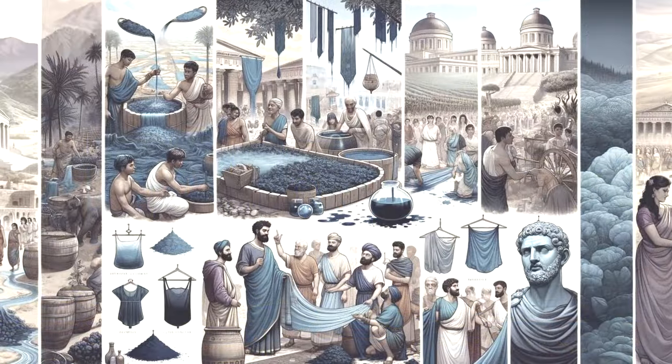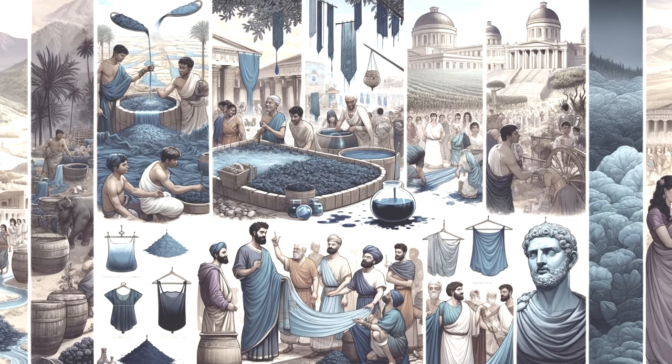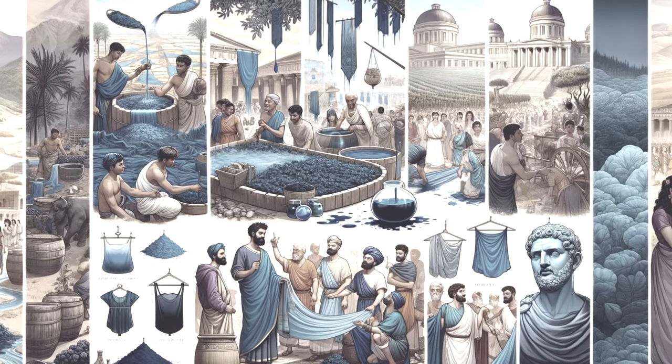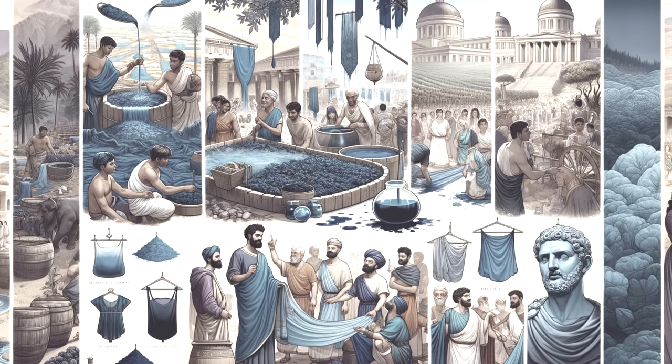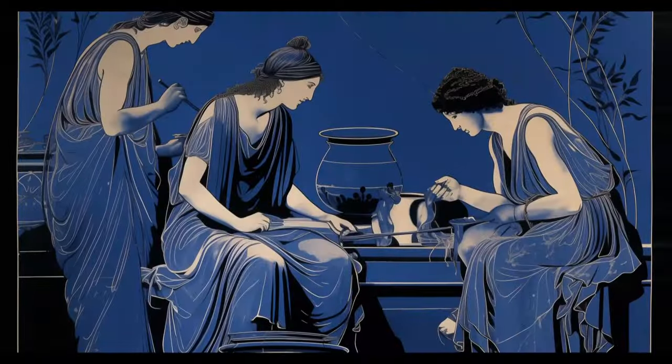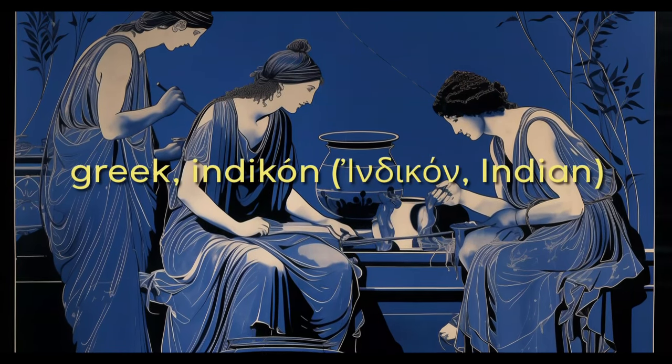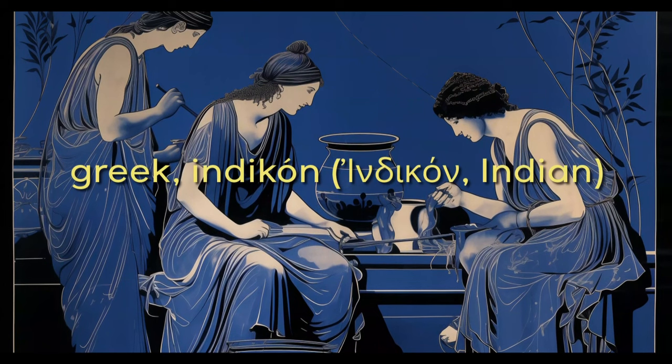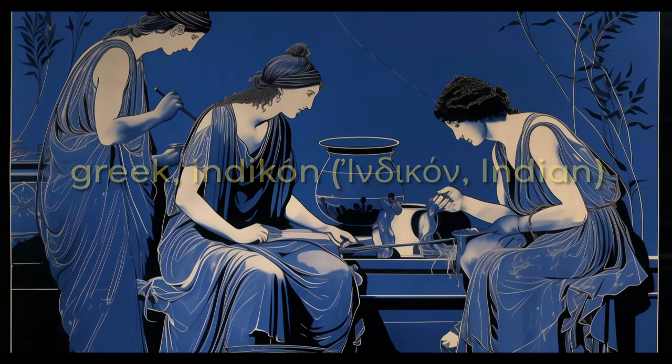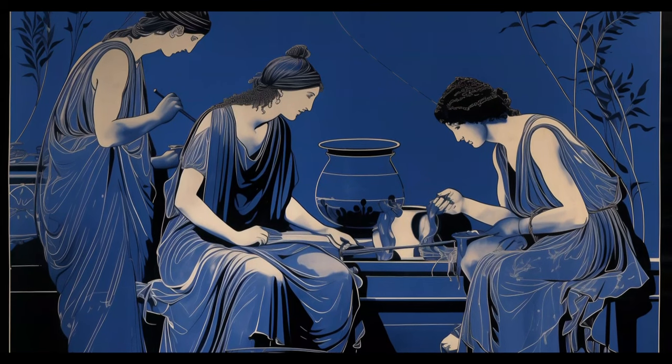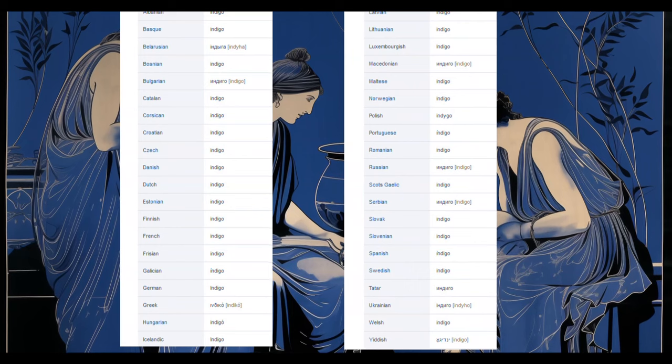From India, the knowledge and use of indigo as a dye made its way to the Greeks and Romans, highlighting the global journey of indigo from its origins. The term indigo itself reflects this journey, originating from the Greek word indikon, meaning from India, and later latinized by the Romans to indicum, evolving into the word indigo in various languages.